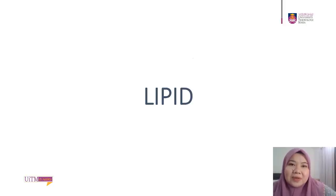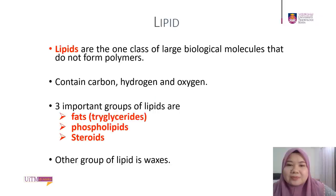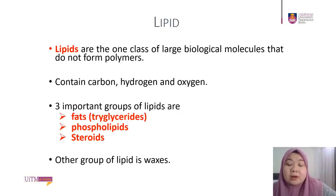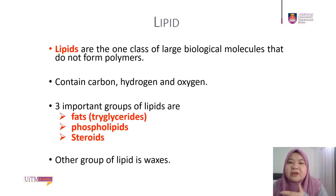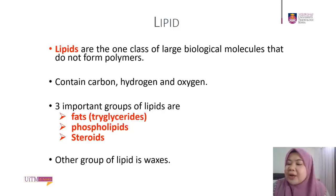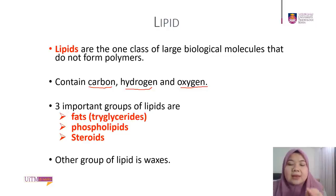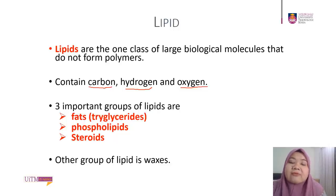Hello everyone. Now we're going to look at the third macromolecule: lipid. Lipids are the one class of large biological molecules that do not form polymers. That's because forming lipids does not involve repetition of monomers — lipids are made of different kinds of smaller units. The three main elements in lipids are carbon, hydrogen, and oxygen. The three important groups of lipids we'll discuss in this chapter are fats or triglycerides, phospholipids, and steroids.